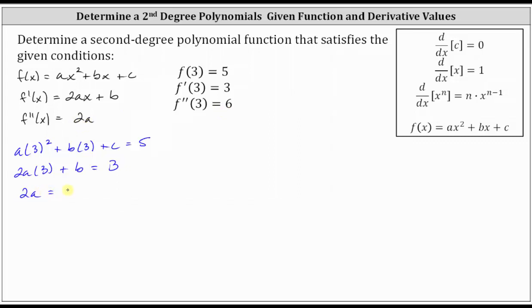We need to solve this as a system of equations, but notice that the third equation only contains one variable. We can easily solve for a by dividing both sides by two, giving us a equals six divided by two, or three. Now that we know a, we need to determine the values of b and c.